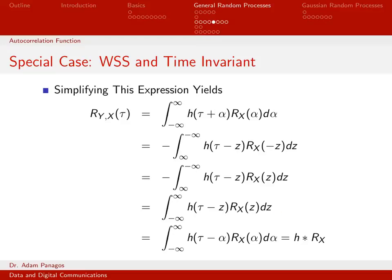We end up with this expression, and we can tell what's going on — this is just convolution. This is convolution of h with the autocorrelation function. So for the special case of a wide-sense stationary input and a time-invariant system, the cross-correlation function r_yx is just the convolution of the impulse response h with the input autocorrelation function r_x.